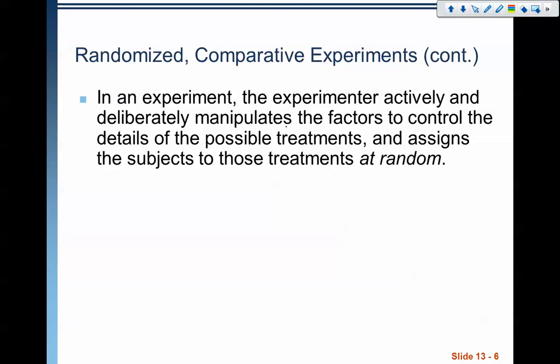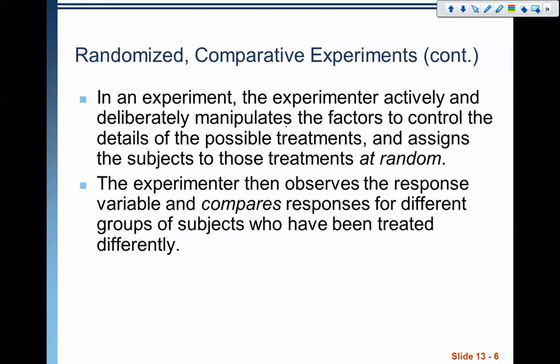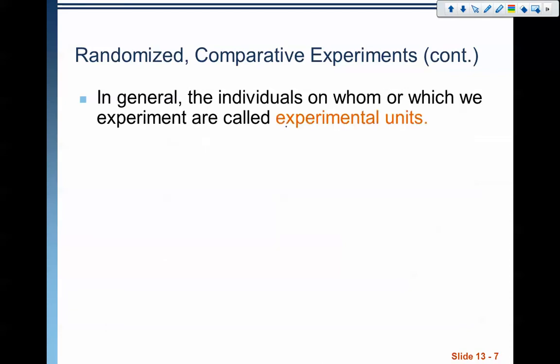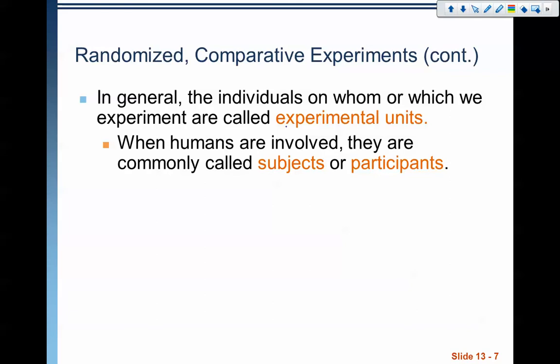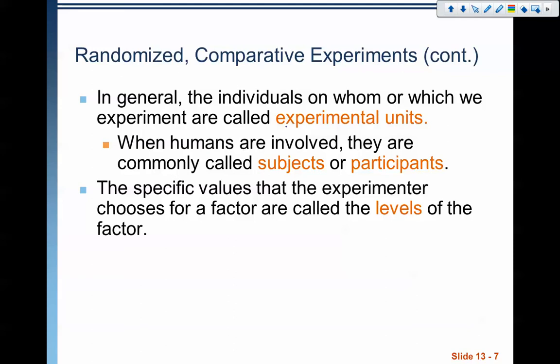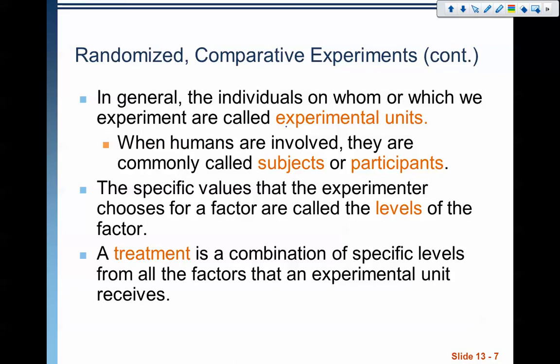Here's some vocabulary we need. In an experiment, the experimenter actively and deliberately manipulates the factors to control the details of the possible treatments, assigns subjects to those treatments at random, and then compares at the end. The individuals in the experiment are called experimental units — you might hear them called subjects or participants if we're talking about humans. The specific values an experimenter chooses for a factor are called the levels of the factor, and once all the levels are decided, the combination is called a treatment.